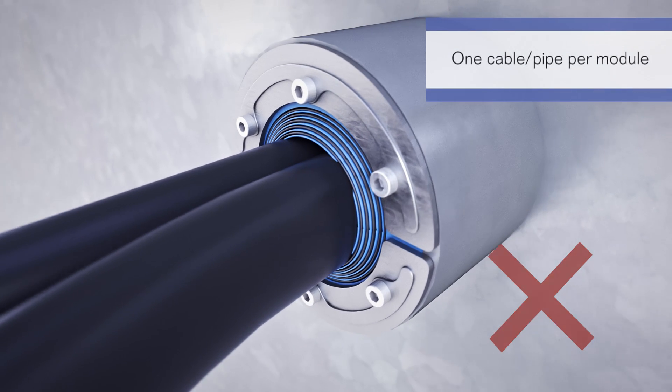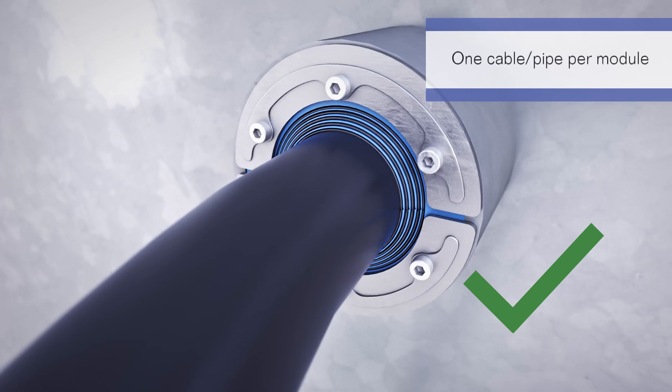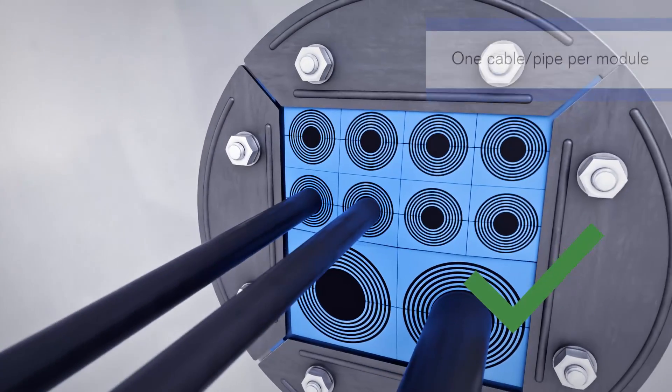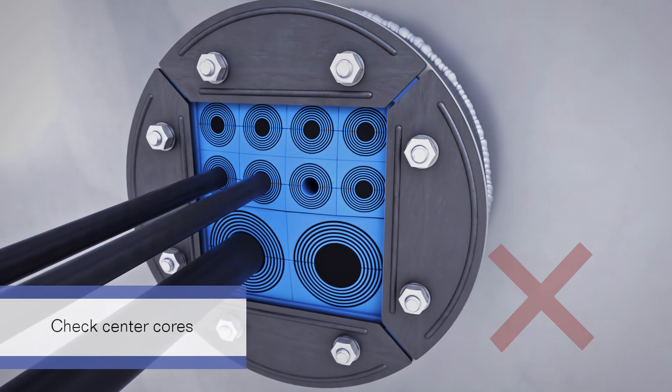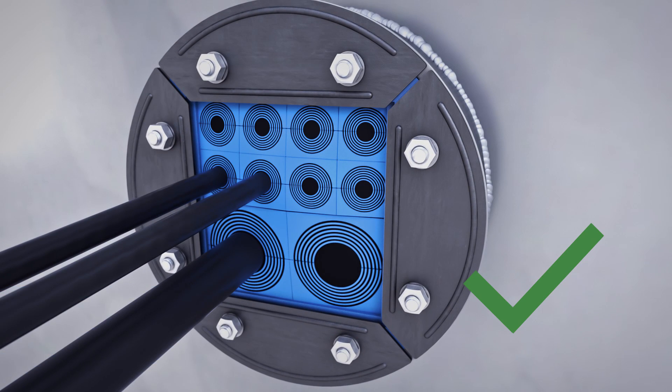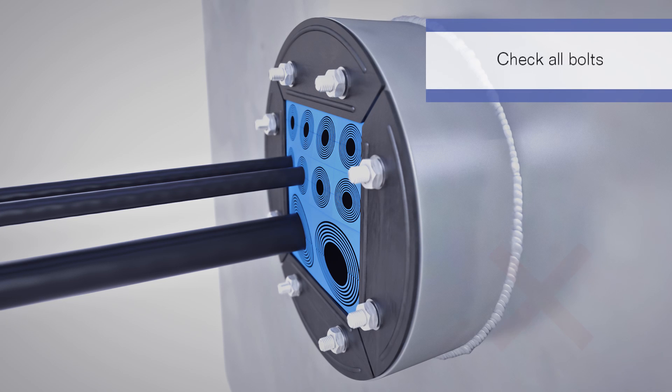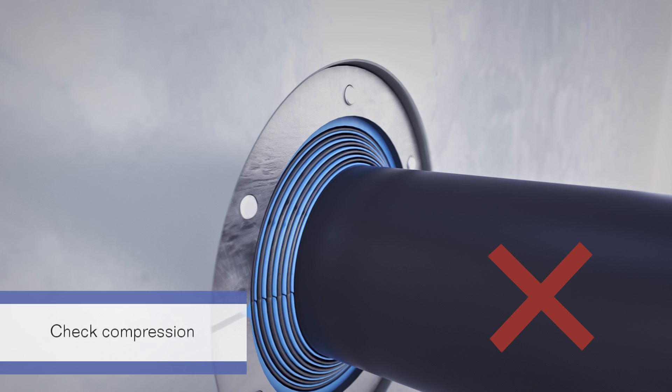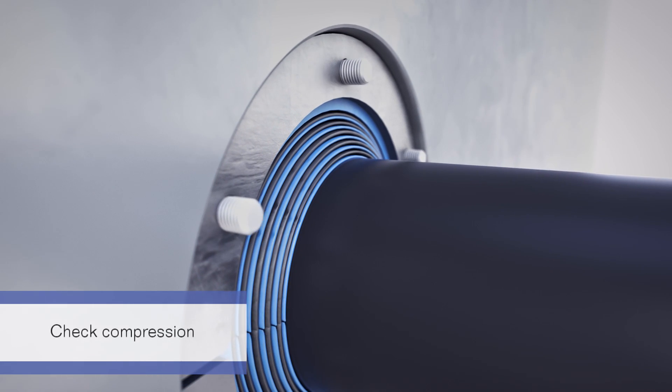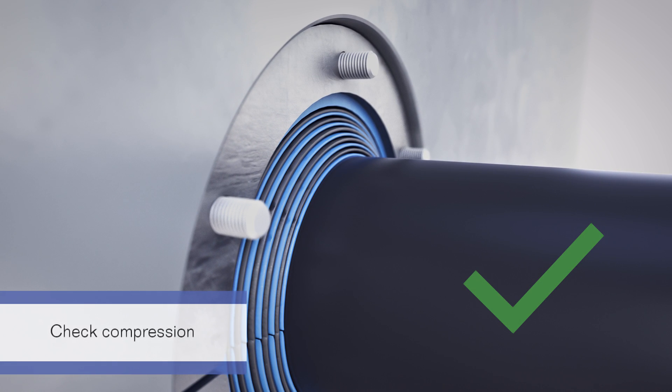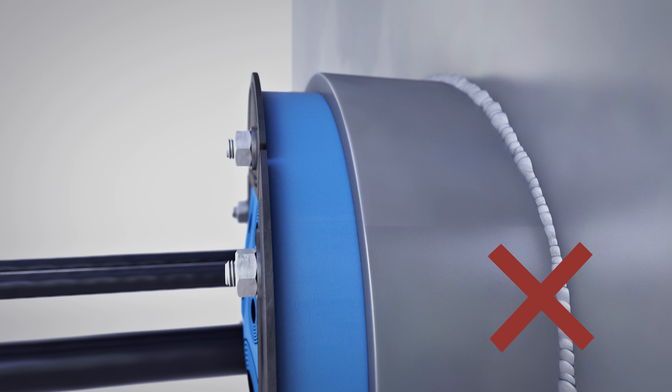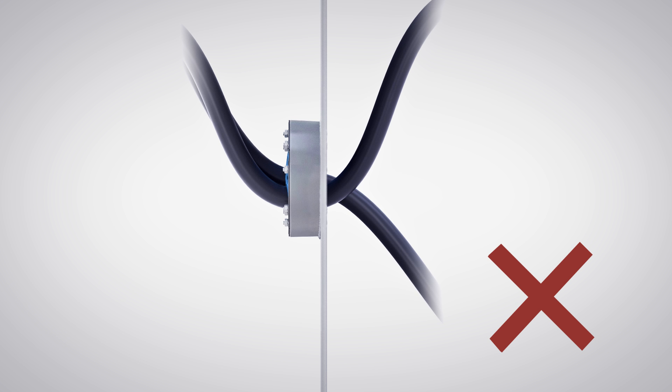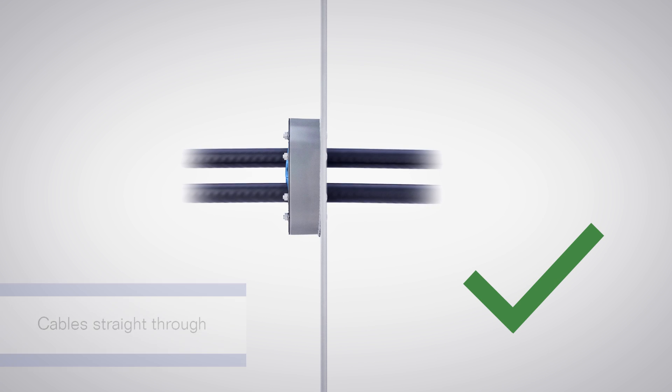Make sure that multiple cables or pipes don't pass through the same module slot. Check that there are no center cores missing. Check that all bolts are tightened in a similar way. Verify that the frame is pushed all the way into the sleeve. Make sure that the cables go straight through the frame.